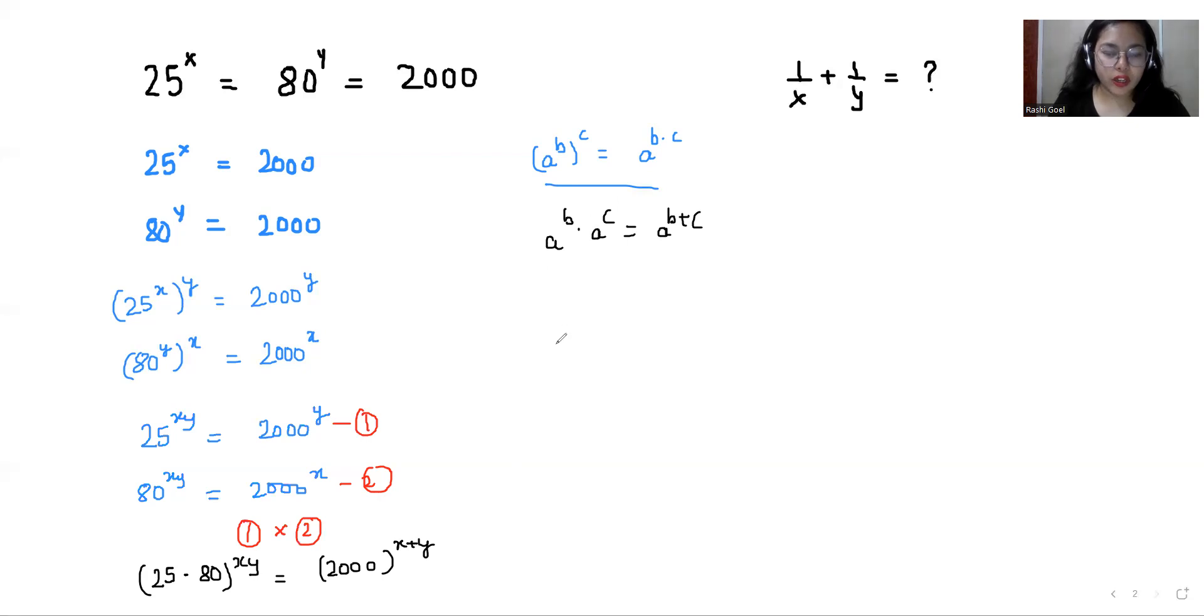Now if I multiply 25 with 80, I get 2000 power xy, and on the right side 2000 power x plus y. Now the exponents are same, that means the powers are also equal to each other: xy equals x plus y.